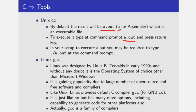To execute it, type at the command prompt a.out and press the return key. In your setup, it may be required to type ./a.out instead of a.out. The dot here means the current directory or folder.